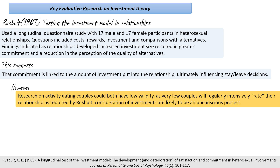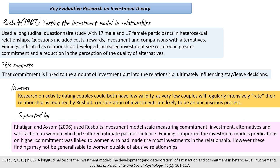An extra piece of evaluative work more recently by Rodrigues and Axsom used the investment model scale, which measured commitment, investment, alternatives, and satisfaction on women who had suffered intimate partner violence — so their partners had been abusive to them. Their findings did support the investment model: the women with the highest commitment to maintaining these abusive relationships were those who had made the most investments in the relationship. But this is just looking at women inside abusive relationships, so these findings might not be generalisable to women outside abusive relationships, although they do explain the continuation of relationships that the usual models of equity theory and social exchange just wouldn't be able to explain.